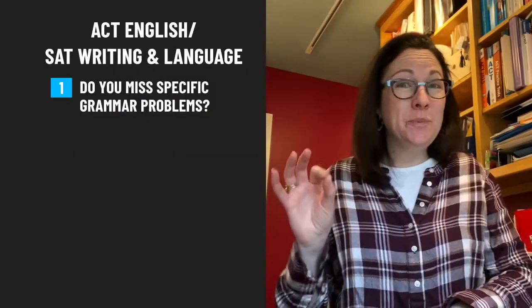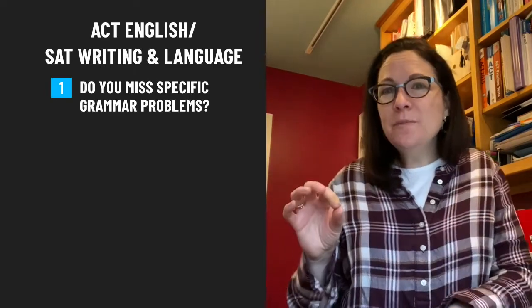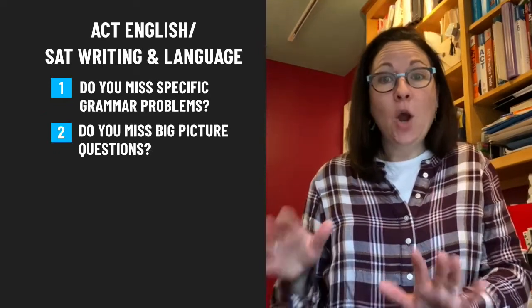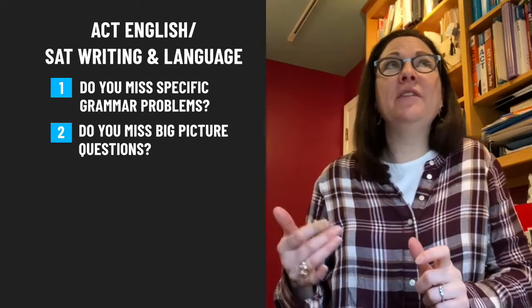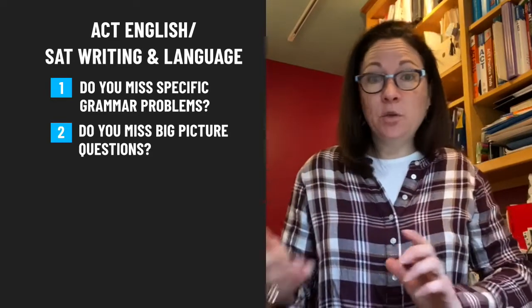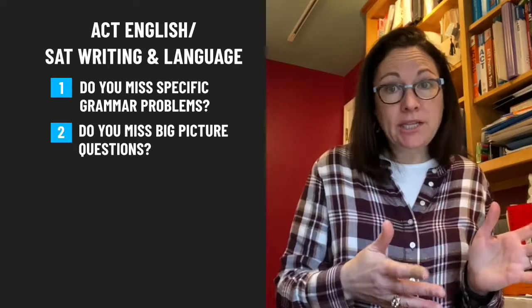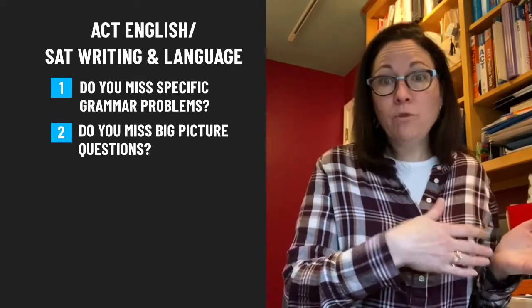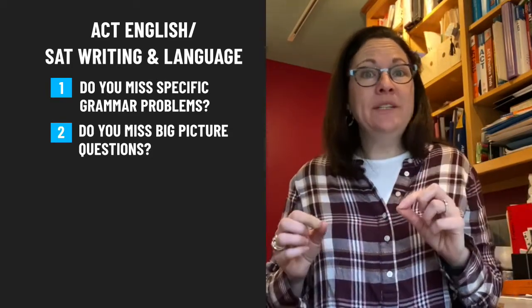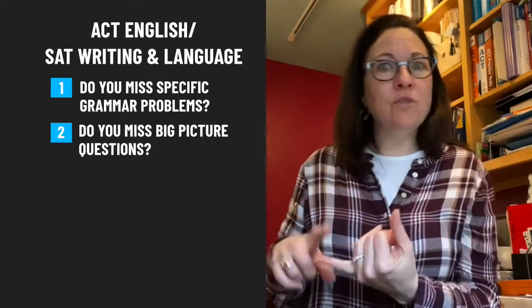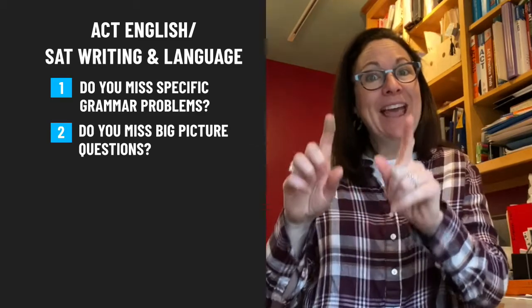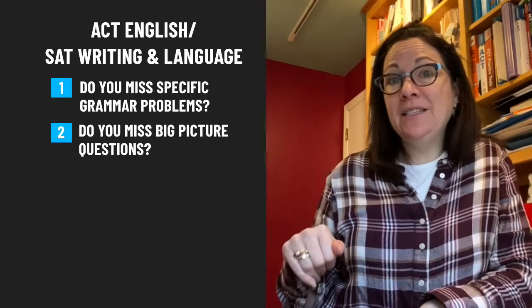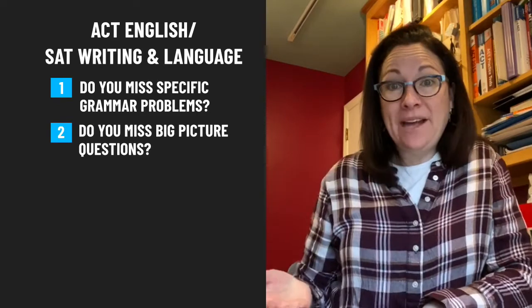In the ACT English or SAT Writing and Language sections, we're talking about grammar concepts and effective writing. Do you miss questions about specific grammar concepts like commas? Or are you missing big-picture questions like when they ask about the author's purpose? Once you know what kinds of questions you're missing, think about what you need to do differently. If you're missing a grammar concept like commas or semicolons, brush up on identifying independent and dependent clauses and which punctuation to use. If you're missing questions about passage content like redundancy, relevancy, or author's purpose, then slow down when reading or work on better comprehending what the passage is about.